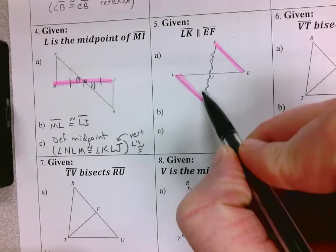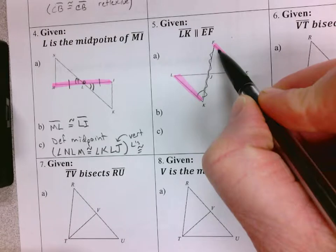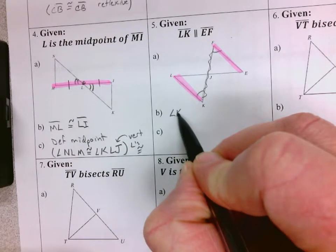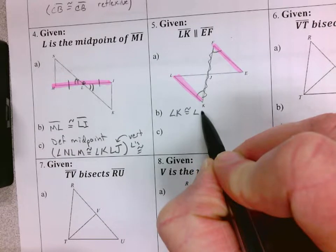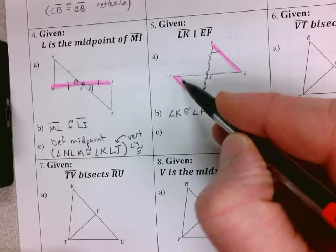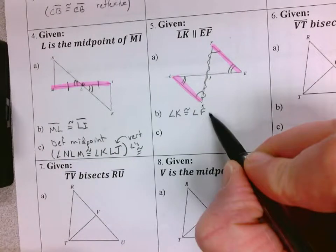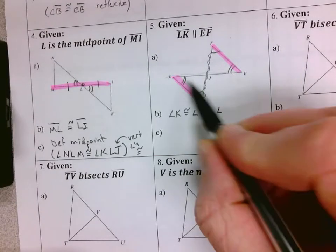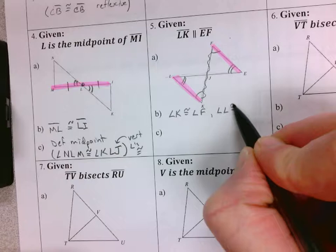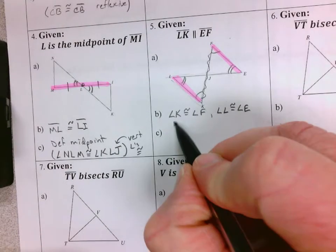There's two different sets of angles that we can say are congruent. This transversal, we would say angle K is congruent to angle F. We can use one letter because it's all by itself out here. And then if we're talking about this transversal, angle L is congruent to angle E.